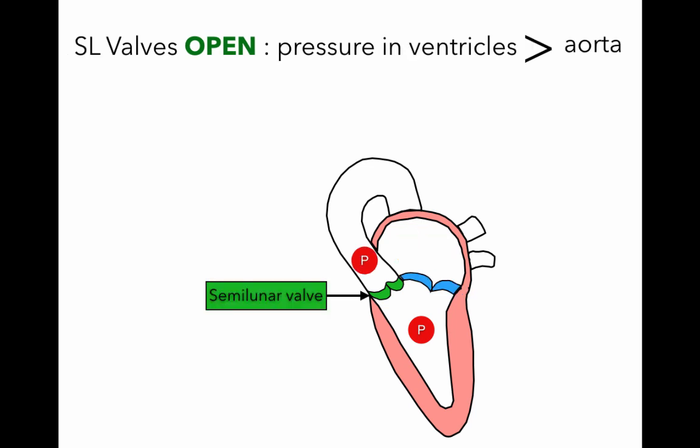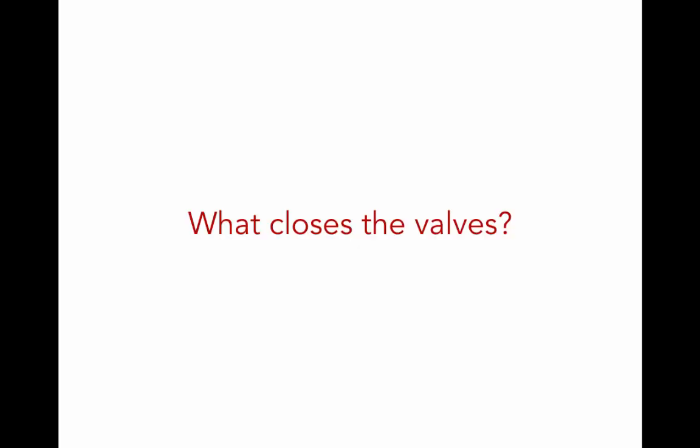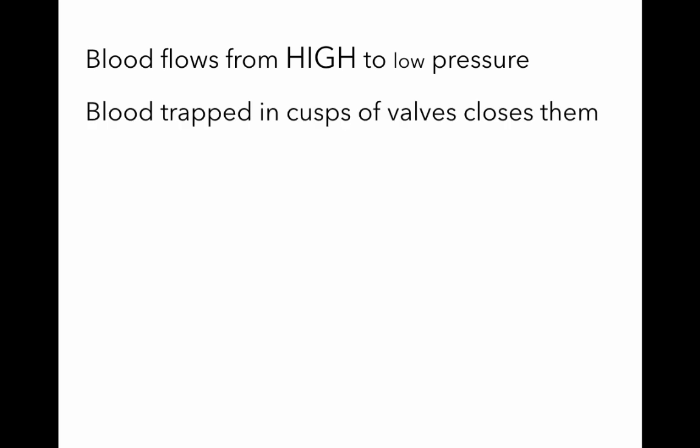As pressure goes up in the ventricle and becomes greater than pressure in the aorta, the semilunar valves will open. For both the atrioventricular and semilunar valves, what causes them to open is when pressure becomes greater in one chamber and blood forces the valves open. The next thing we need to look at is what closes the valves — blood flows from areas of high to low pressure and gets trapped in the cusps of the valves, closing them.